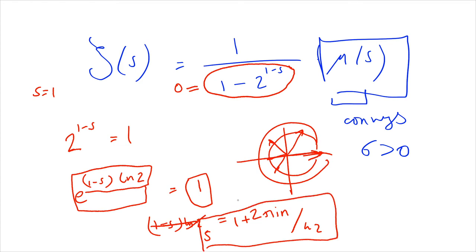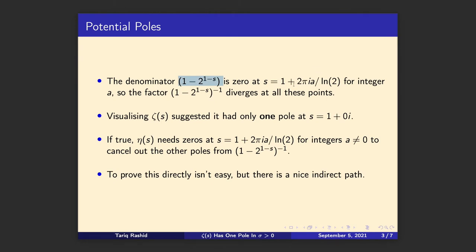So we've found multiple values of s which give 2 to the 1 minus s equals 1, hence making the denominator zero. The denominator of the factor (1 minus 2 to the 1 minus s) is zero not just at s equals 1 but also at s equals 1 plus 2πia over log 2, for any integer a. That suggests there are in fact an infinite number of divergences from that factor. But when we visualised the Riemann zeta function, we only saw one pole or one singularity — though that was just a visualisation, not proof.